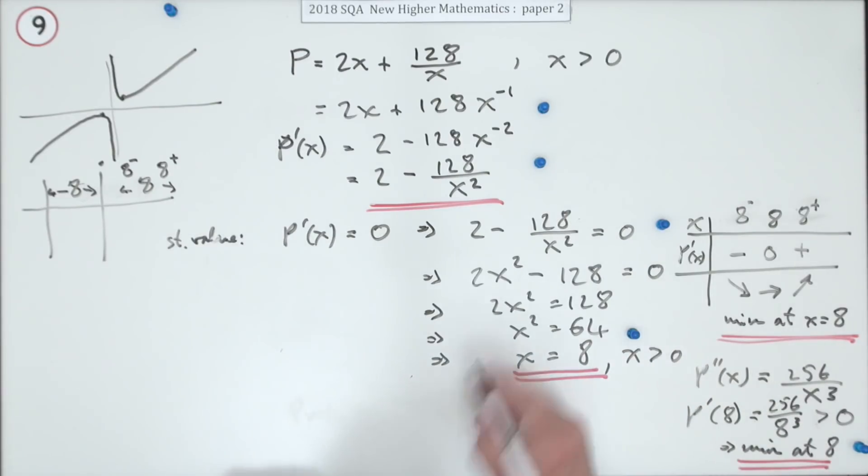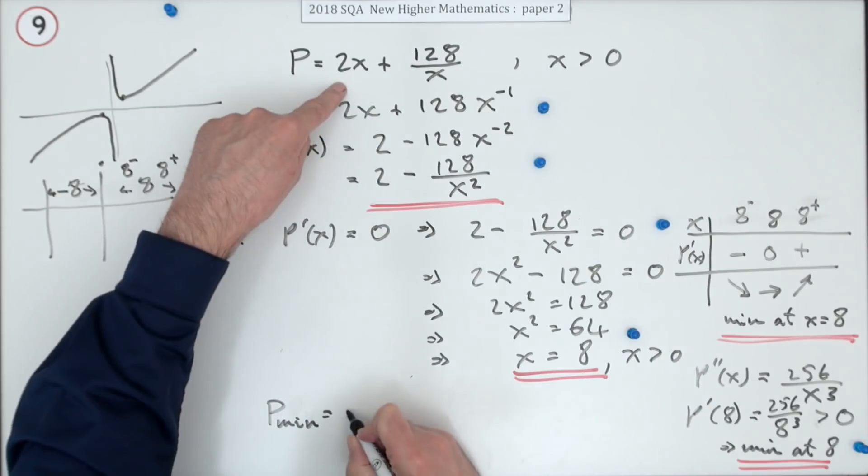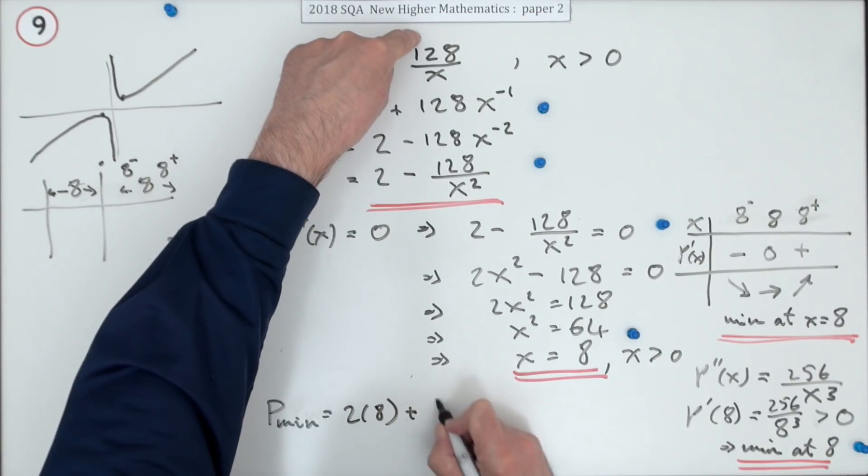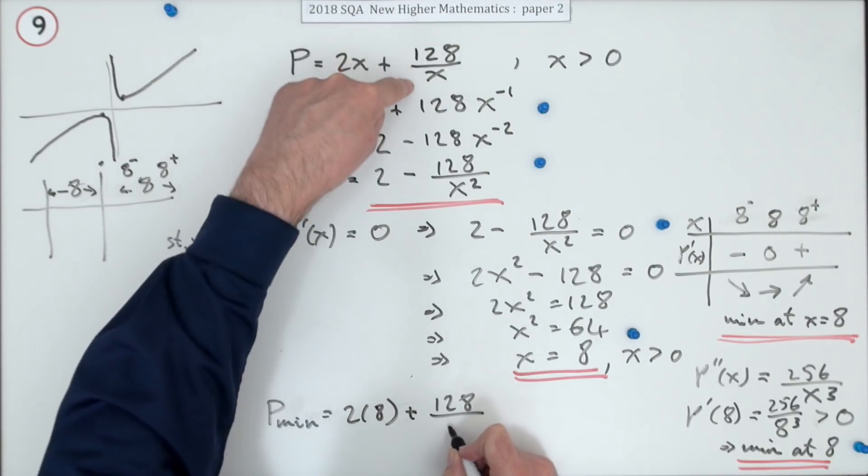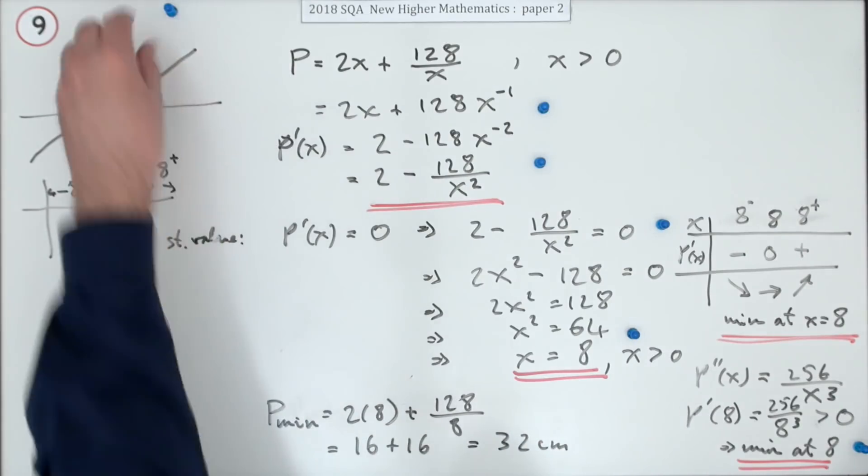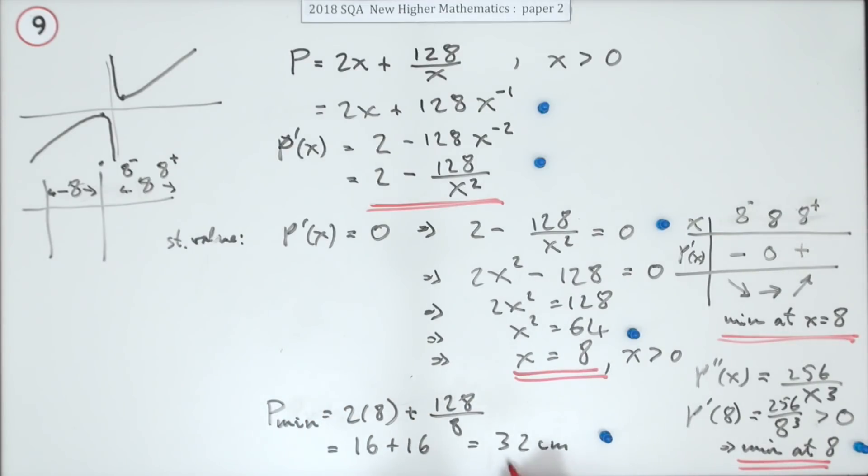That's an alternative for that mark. Anyway, that was a big diversion. What's the minimum value of P? P minimum. That'll be 2 times 8, remember use that not this, plus 128 over another 8. So that's 16 plus 16. So that's 32, and it was in centimetres. And there's the last mark.